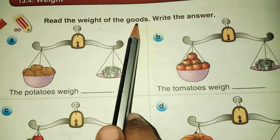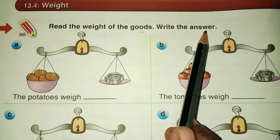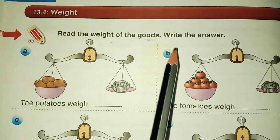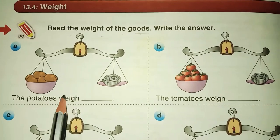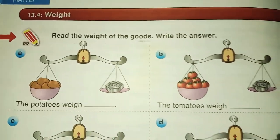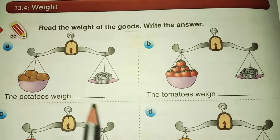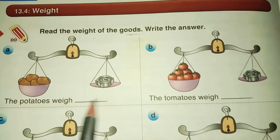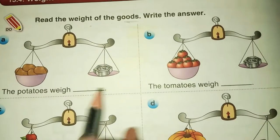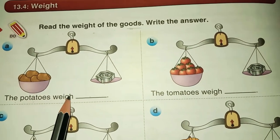Read the weight of the goods and write the answer. Goods means objects. See here, they given simple balance here and they given some goods also here. You have to observe the weight and you have to write in the given space. The potatoes weighs how much kg?